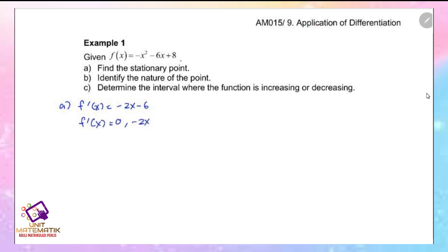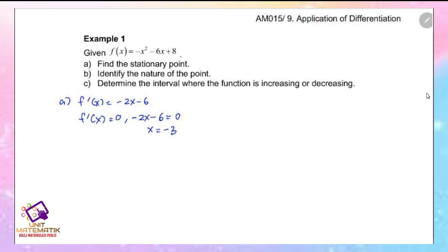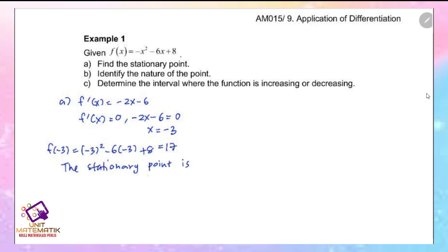Setting negative 2x minus 6 equals 0 gives x equals negative 3. Substitute x equals negative 3 into the function: f(negative 3) equals negative (negative 3) squared minus 6 times (negative 3) plus 8, which gives 17. So the stationary point is (negative 3, 17).